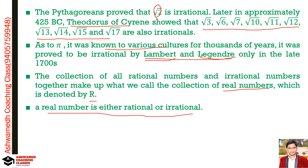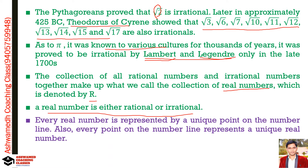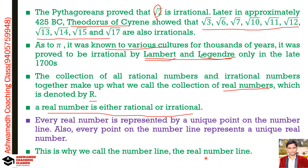Every real number is represented by a unique point on the number line, and every point on the number line represents a unique real number — either rational or irrational. That is why we call the number line the real number line, because all numbers are there on it.